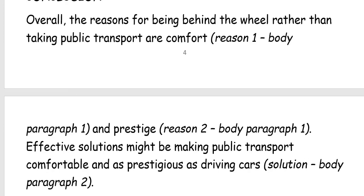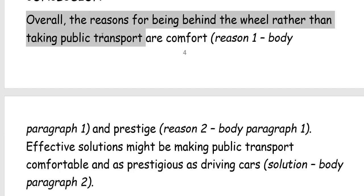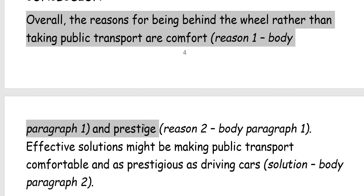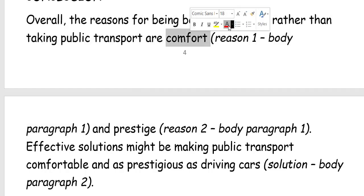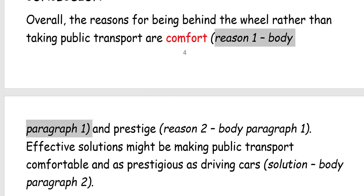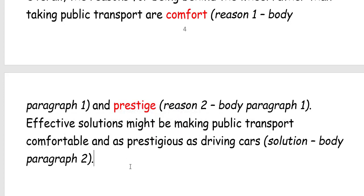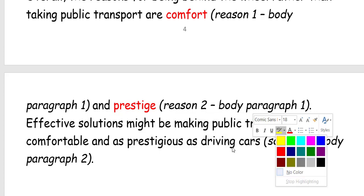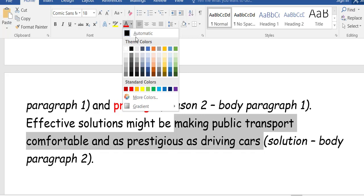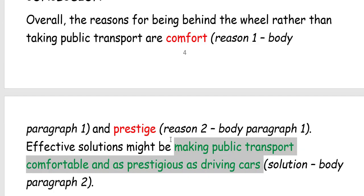Now let's look at the conclusion paragraph. 'Overall, the reasons for being behind the wheel rather than taking public transport are comfort and prestige.' First, explain the two reasons you have mentioned. Next: 'Effective solutions might be making public transport comfortable and as prestigious as driving cars.' Here you indicate the exact solution offered in your second body paragraph. Basically, you summarize — you don't introduce any new ideas, you only summarize the main points made in body paragraphs one and two.